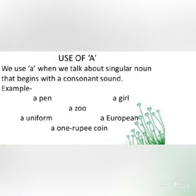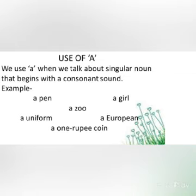Kids, when do we use 'a'? We use 'a' when we talk about a singular noun that begins with a consonant sound. You all know vowels and consonants. Vowels means a, e, i, o, u. Whereas consonants — apart from these five letters of the alphabet, the rest of the 21 letters are known as consonants. If a singular noun begins with a consonant sound, then we use the word 'a' before it. Like, 'a pen' — here 'p' is a consonant.